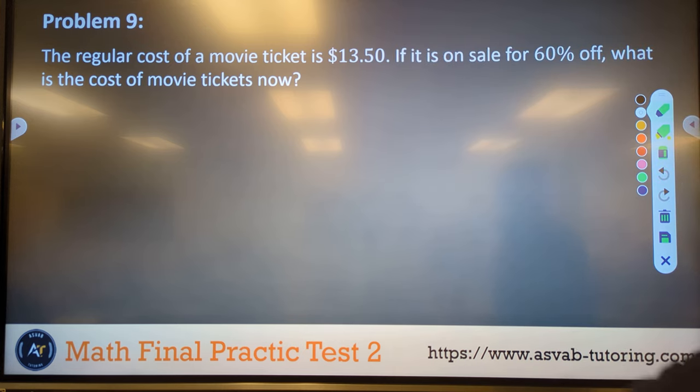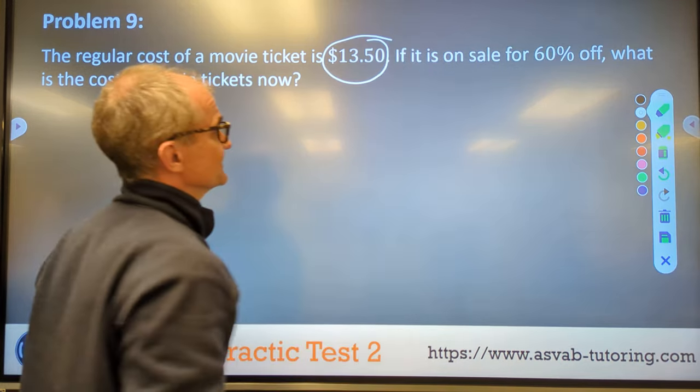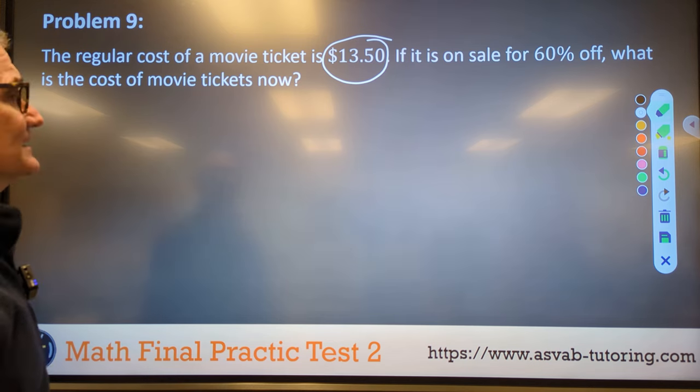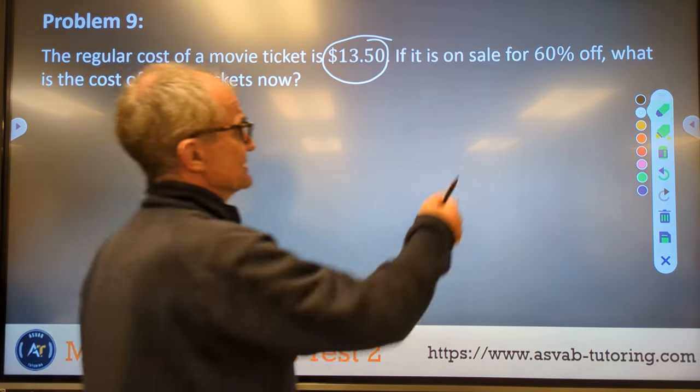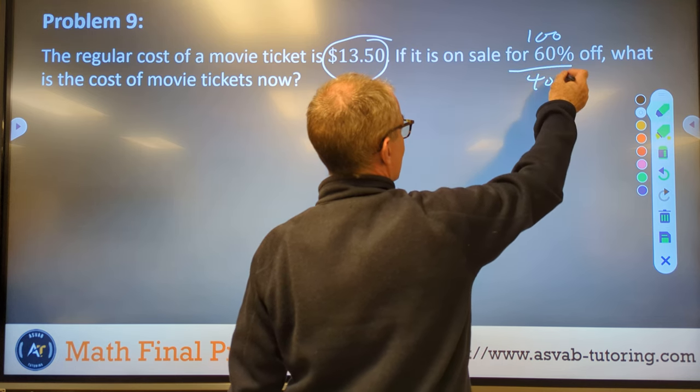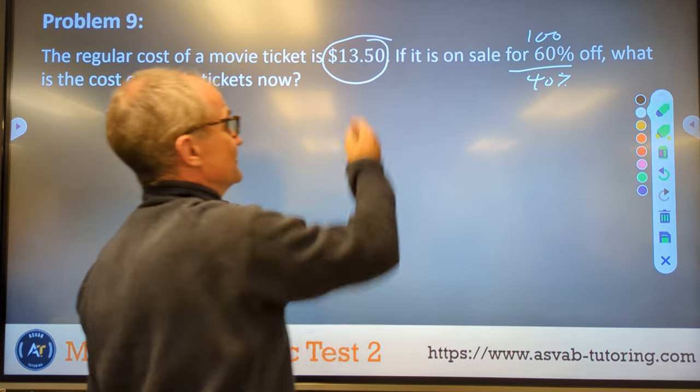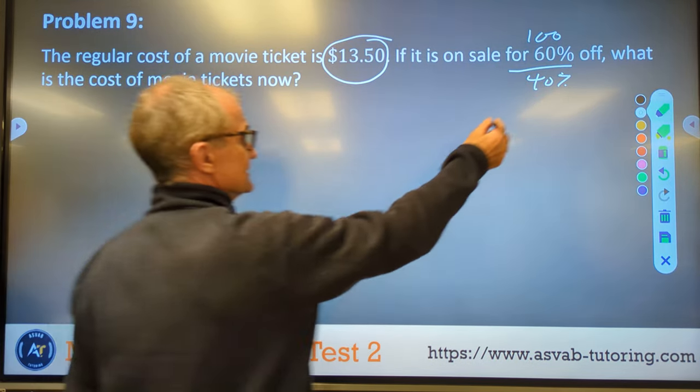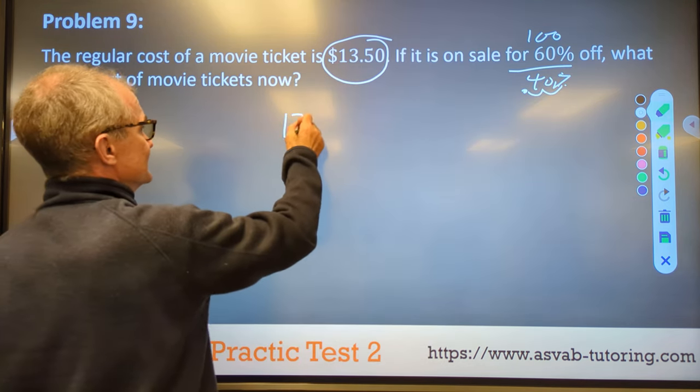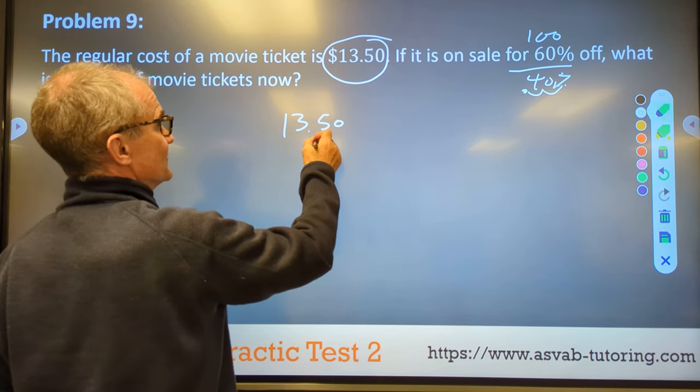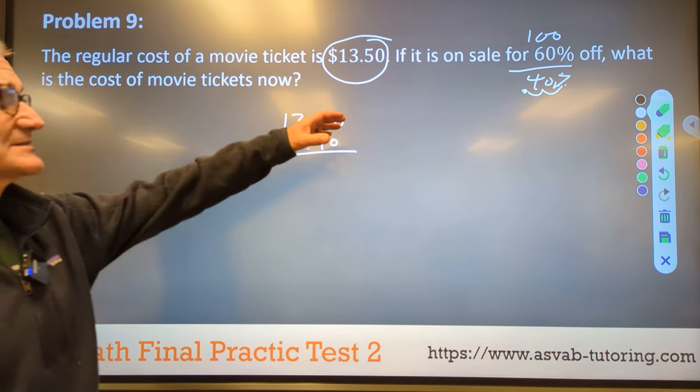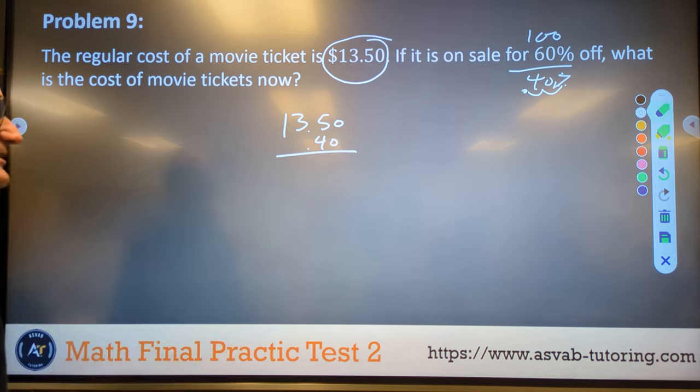Problem number 9. The cost of a movie ticket is $13.50. It is on sale for 60% off. What is the cost of the ticket now? So 60% from 100% is 40%. So the cost is going to be right now is 40% of $13.50. I think of this as an arrow and I move the decimal over 1, 2 to get 0.4. So I'm going to take $13.50 times 40% right there, and that's going to be the cost of the ticket. I could do the 60% and then subtract it from there, or I could just go straight to there.